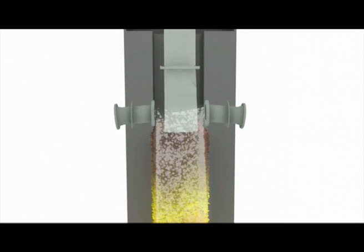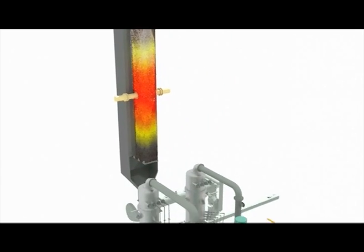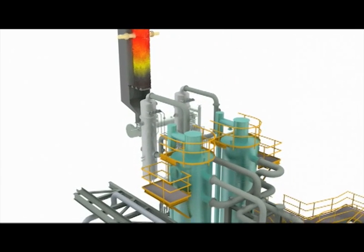Retort off-gas, containing the oil mist, gaseous hydrocarbons and water vapor, is fed into the oil recovery section.